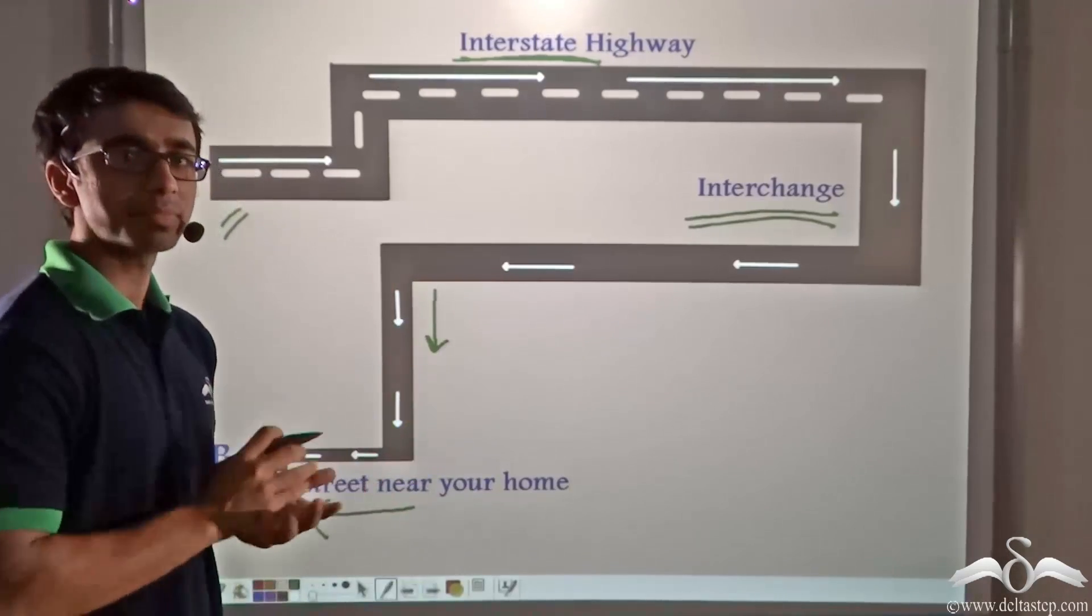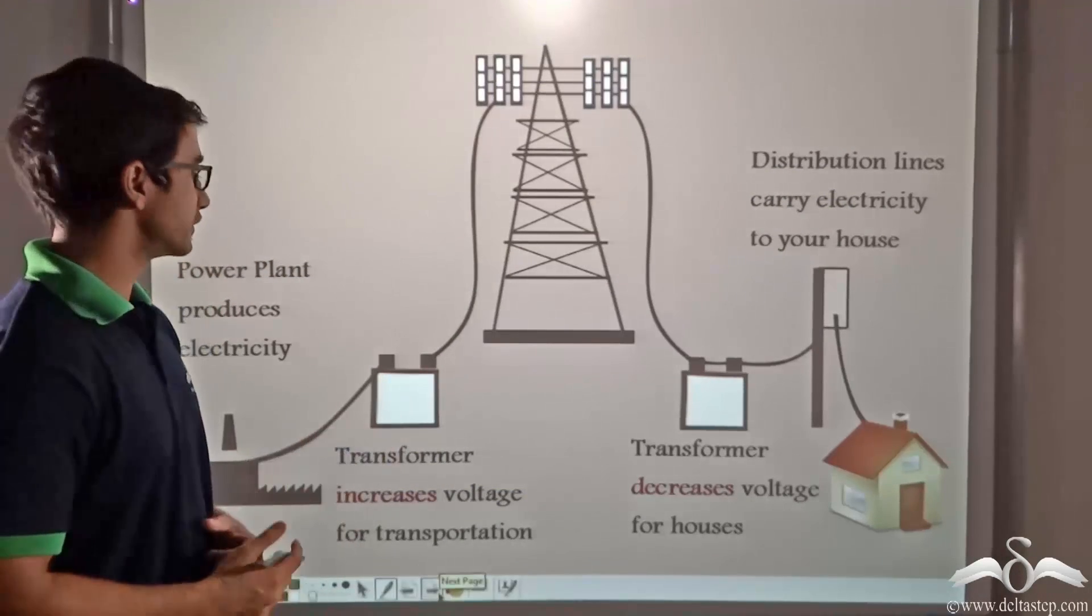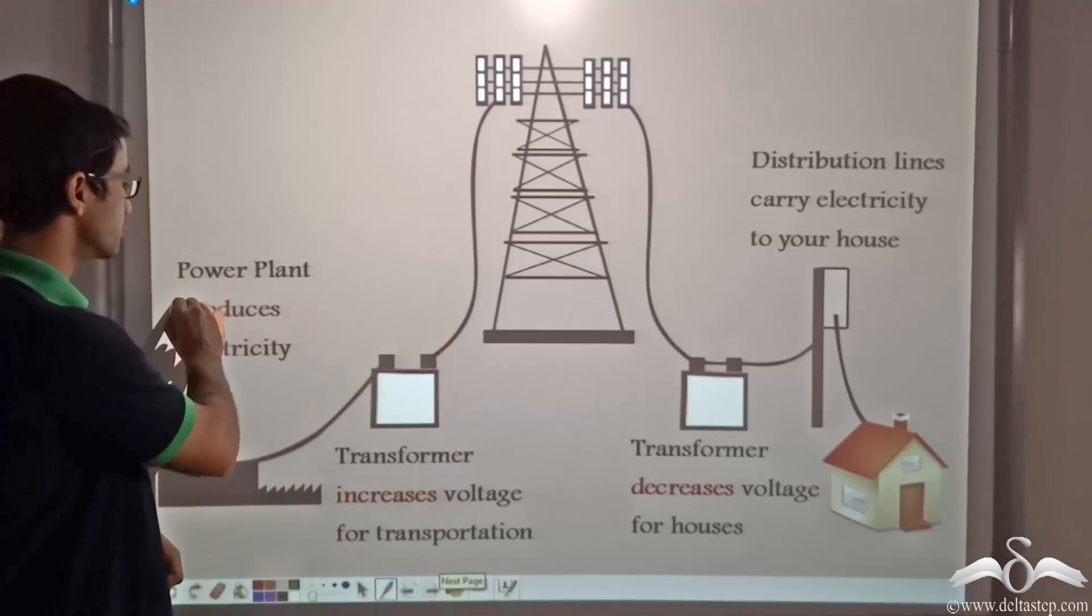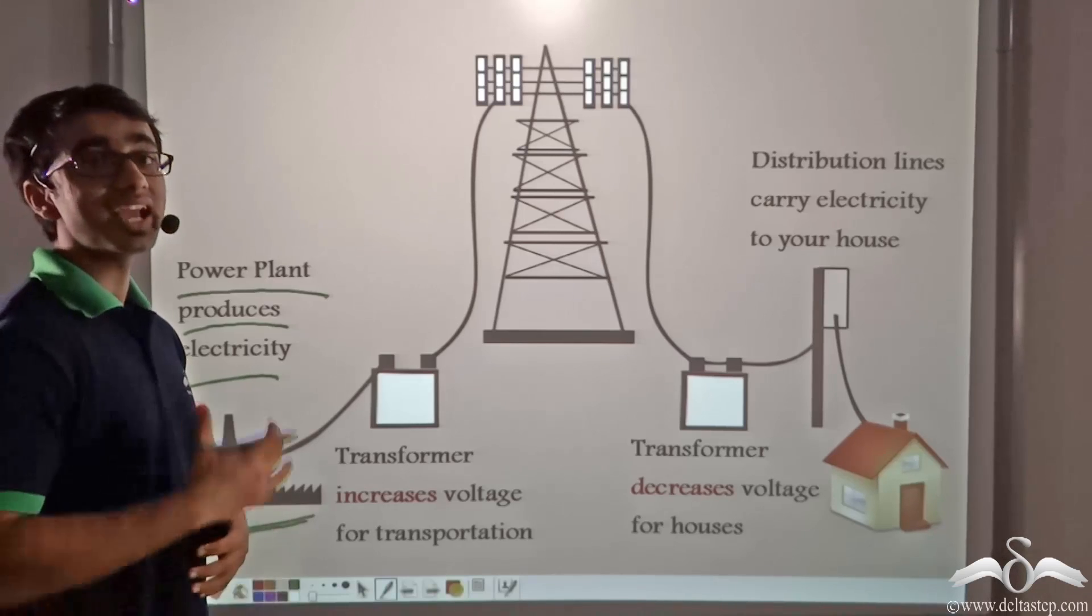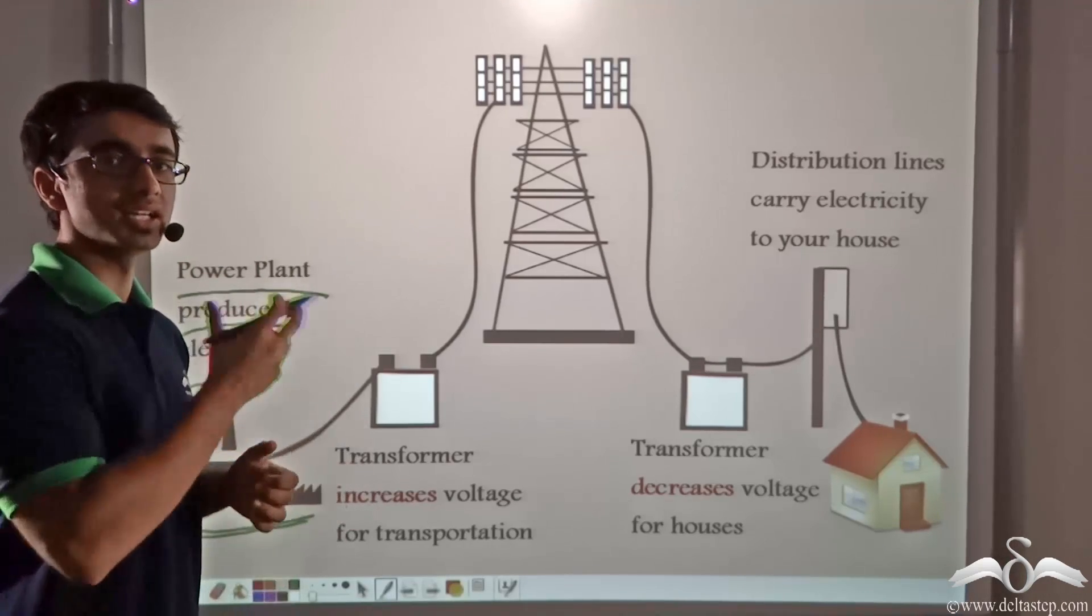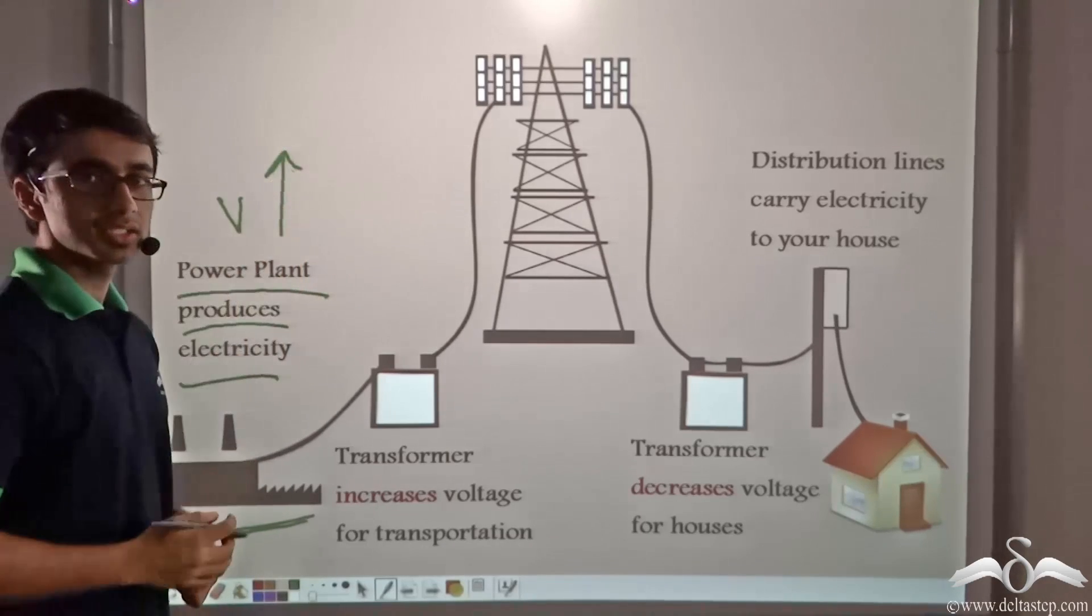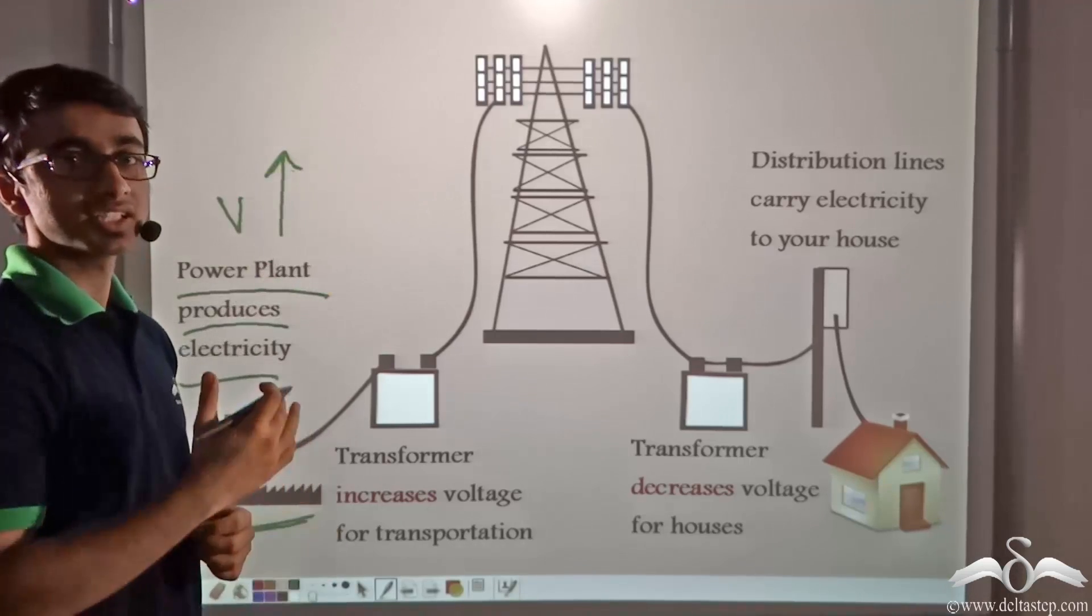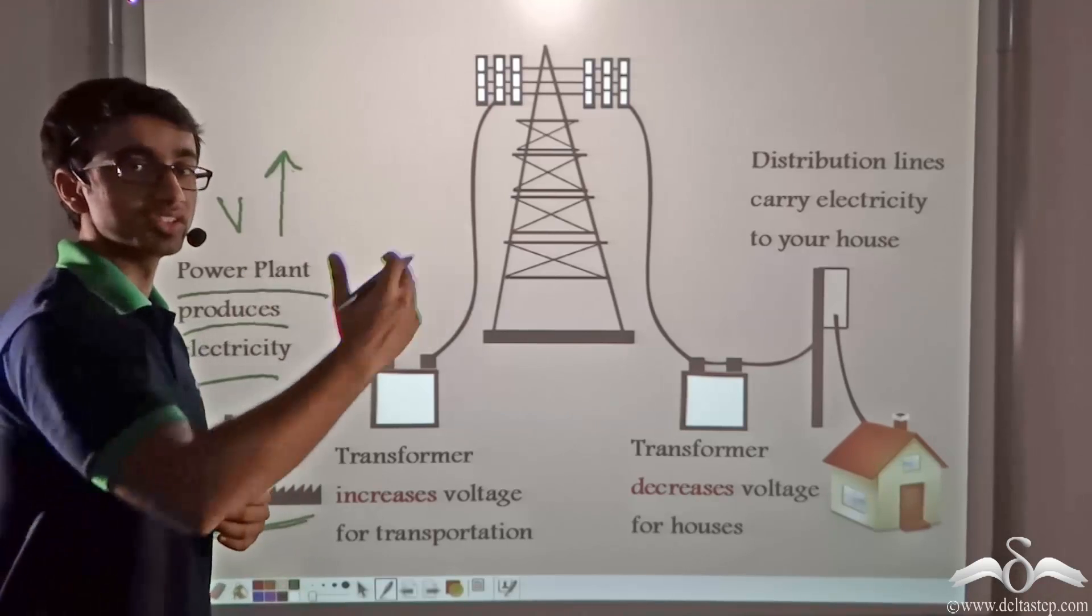Now a similar thing happens in the case of current. Consider this picture carefully. Over here we have a power plant that is producing electricity. So this power plant produces electricity at a very high voltage. Compare the voltage to the speed of the car in the earlier case. Over here a very high voltage is considered because this voltage has to travel for long distances, just like in the previous case where the speed was high because the driver had to travel a long distance.